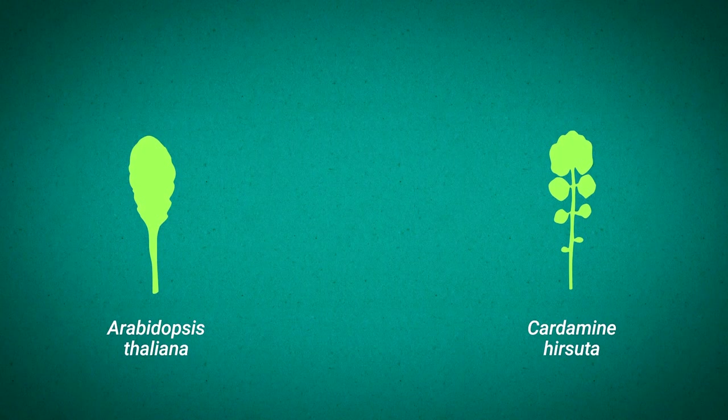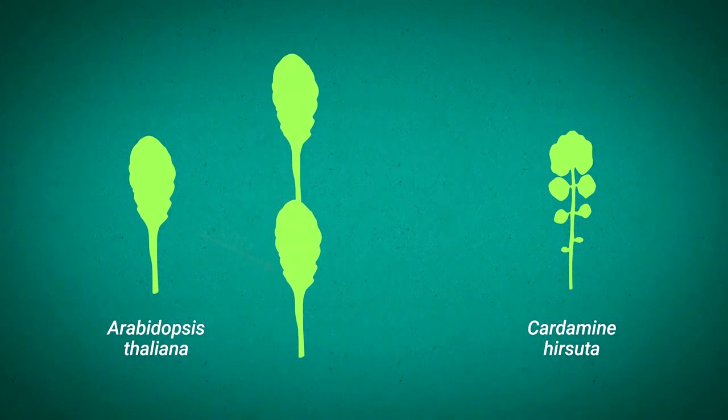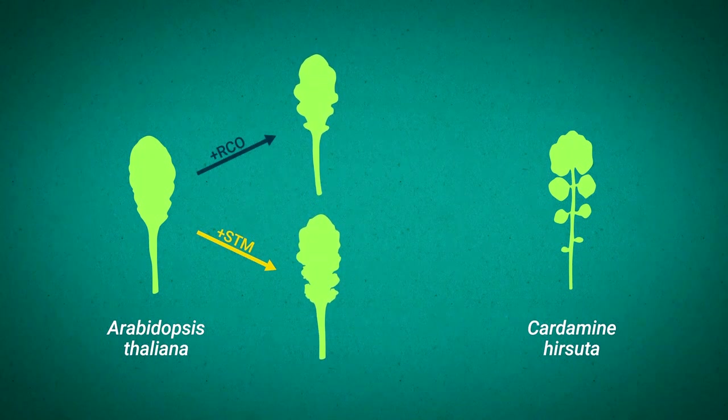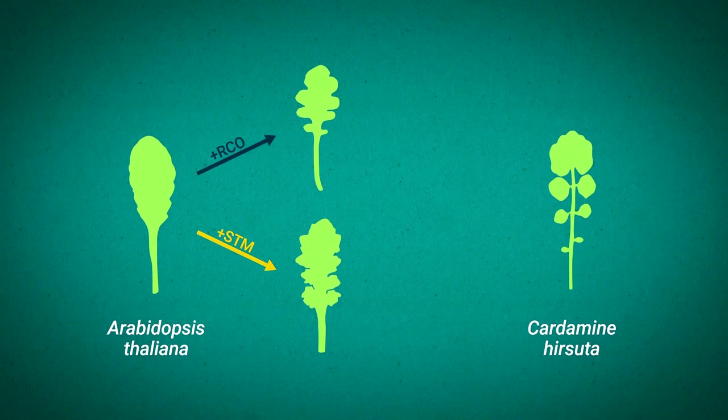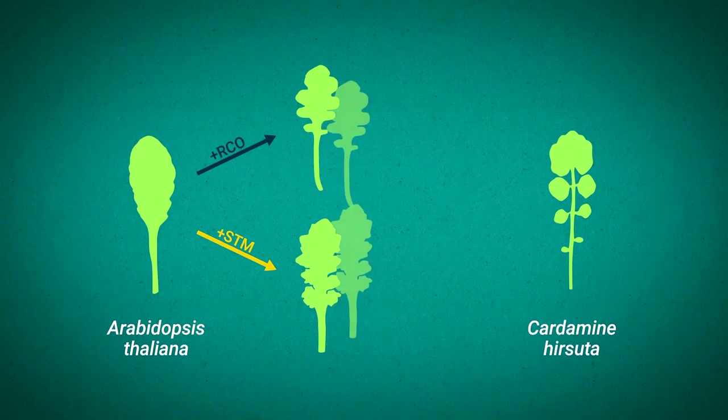Guided by these findings we then converted the simple leaf of Arabidopsis into a complex shape closely resembling cardamini by introducing expression of both RCO and STM in its leaves.